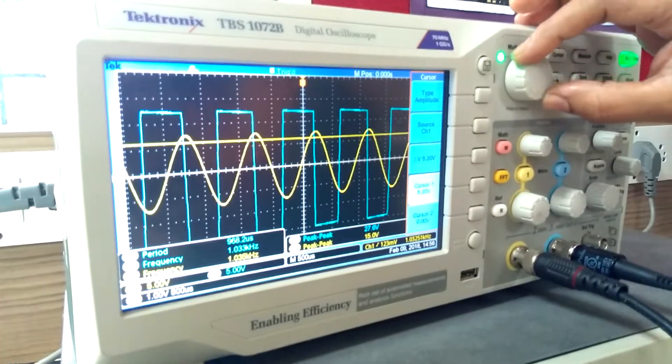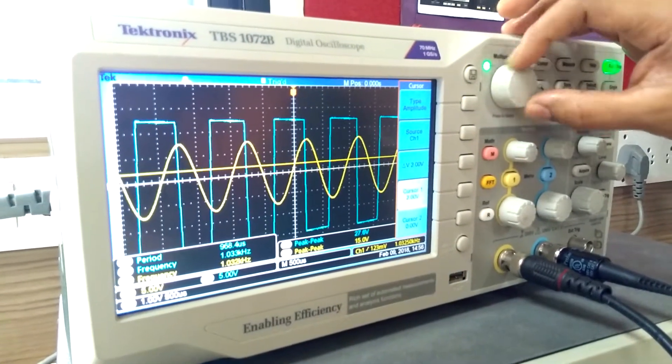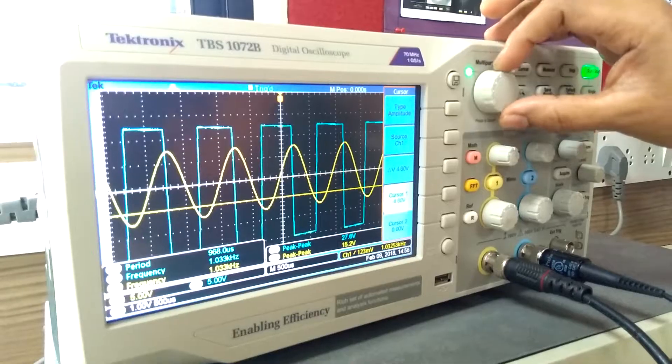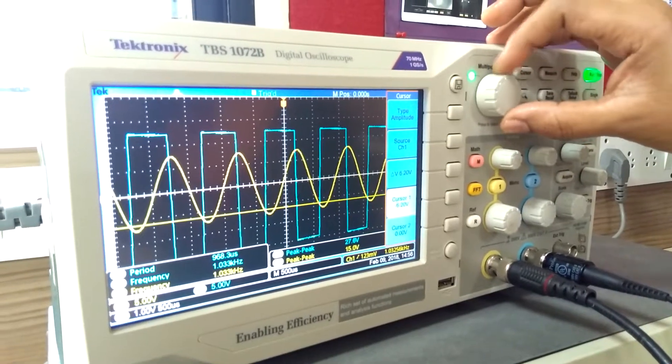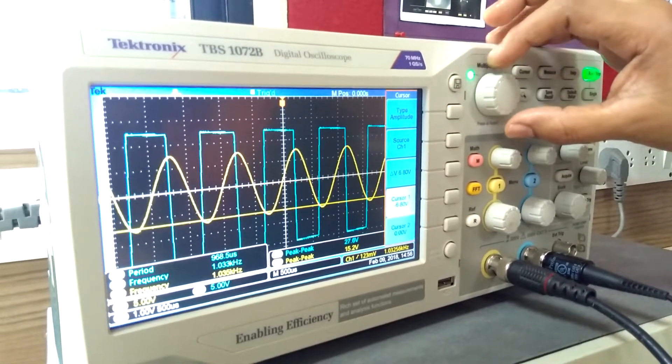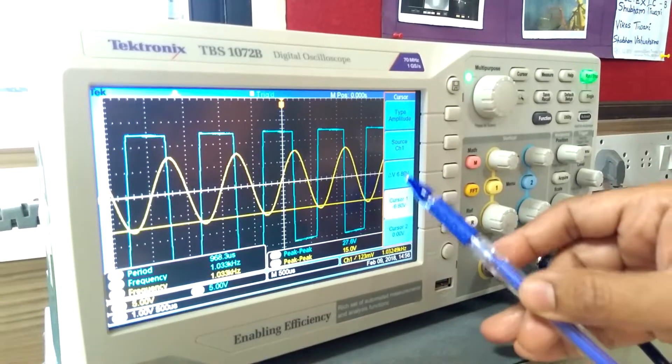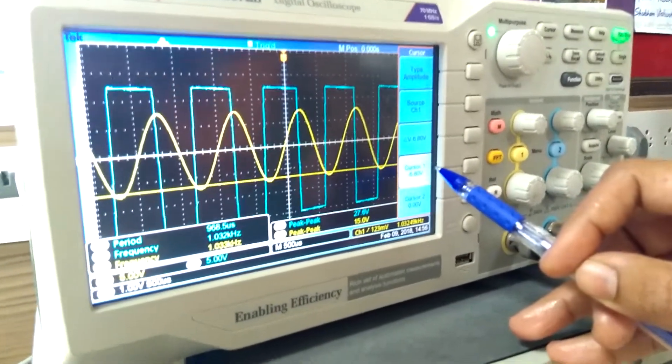Similarly, we can check LTP below zero line. Now delta V showing the value of LTP, that is negative value.